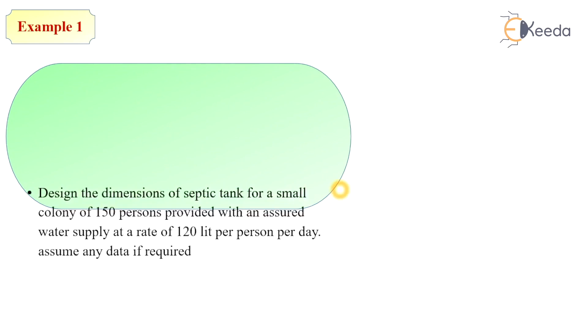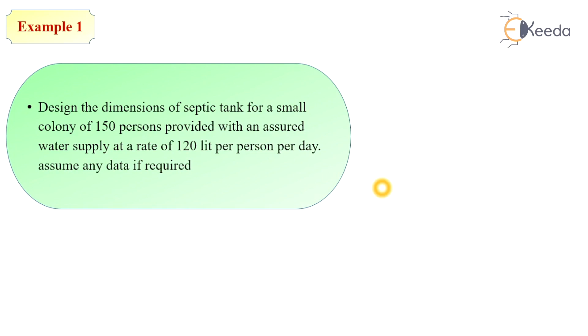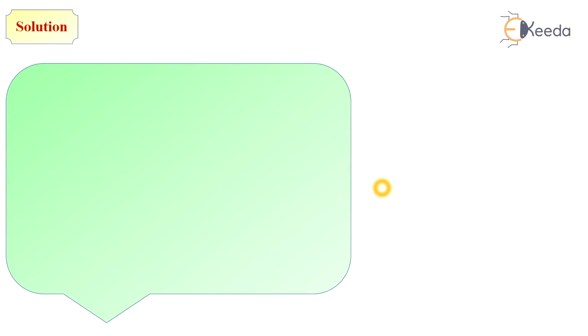On the basis of these design considerations we are solving the problem. Let's see the first problem. Design the dimensions of a septic tank for a small colony of 150 persons provided with an assured water supply rate of 120 liters per person per day. Assume any data required.